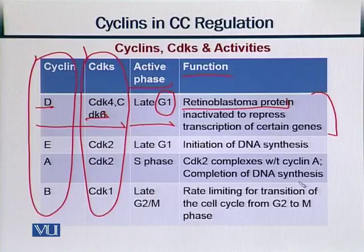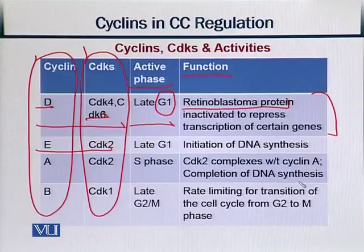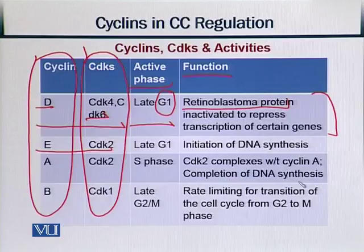Then we have Cyclin E with CDK2, which is active in late G1. Its function is the initiation of DNA synthesis — starting the process of DNA being synthesized and reproduced. Similarly, other cyclins work in partnership with different CDKs, are active in different phases, and perform different functions.